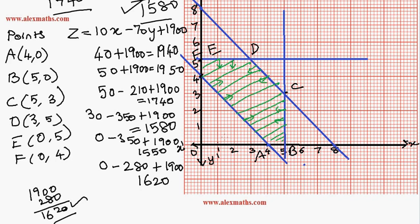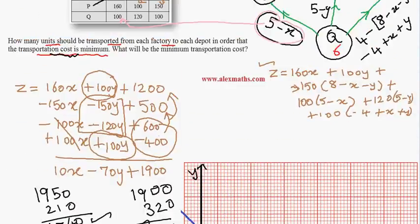Among all these values, the minimum cost is 1550, which occurs at point E, which is (0, 5). So our optimal solution is x = 0 and y = 5.